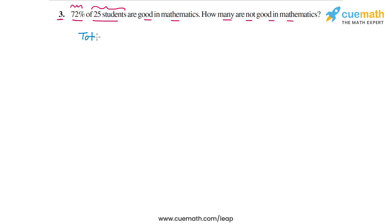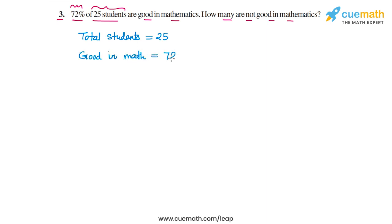First, we write the total number of students, which is 25. Then we write the percentage of students who are good in mathematics: 72%. This 72% is 72% of the total number of students, which is 25. Now let's convert it into an absolute number.